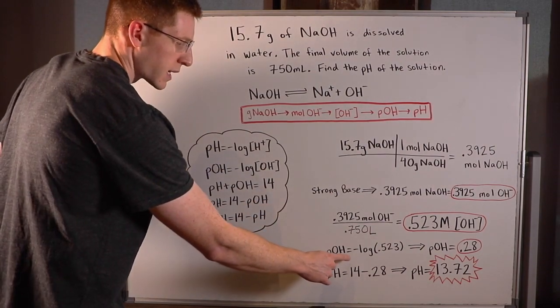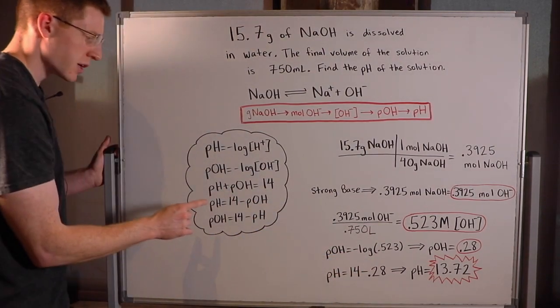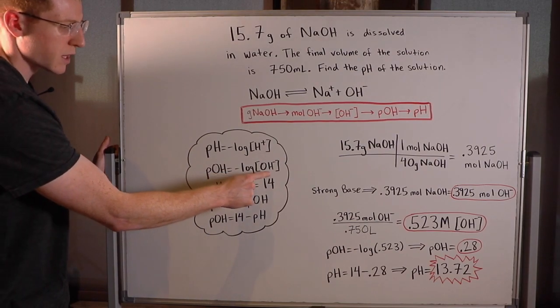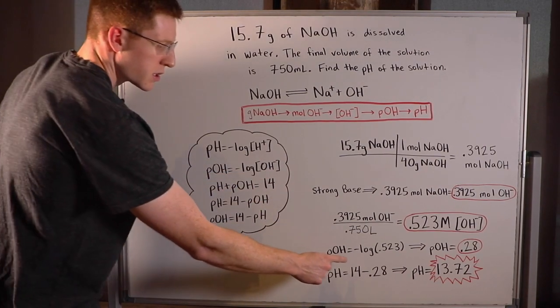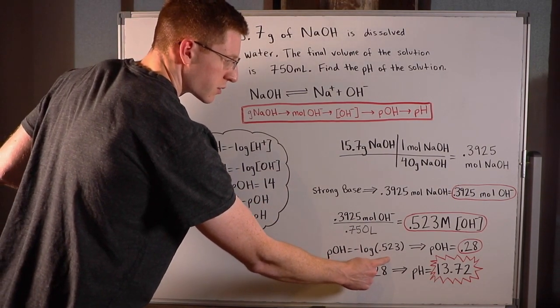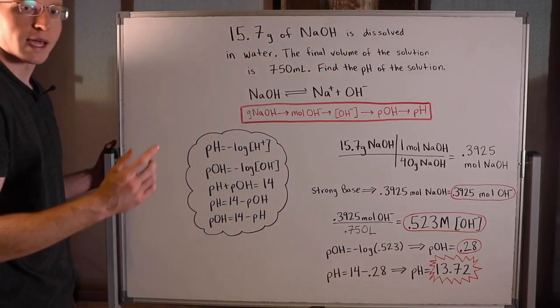From here, I can plug this directly into the definition of pOH, which is the negative log of the hydroxide concentration. So negative log of 0.523 gives me a pOH of 0.28.